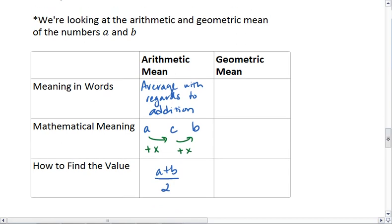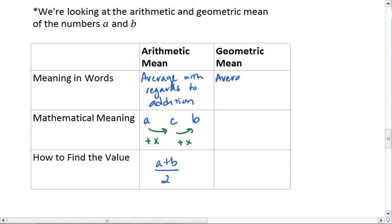The geometric mean is an average with regards to multiplication. So we want a middle number that's the same distance away from the two numbers with regards to multiplication.